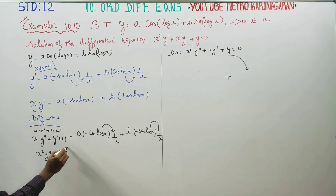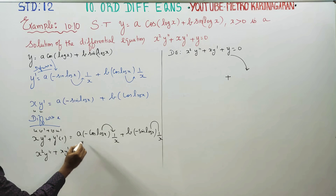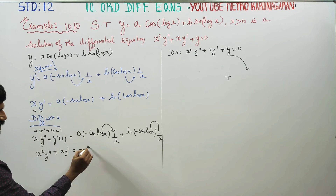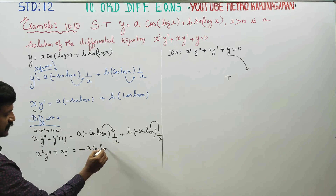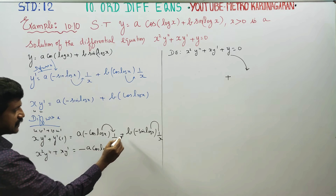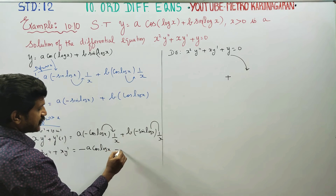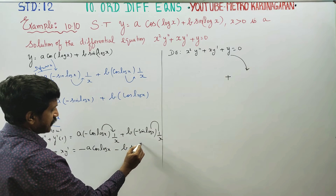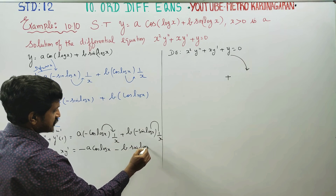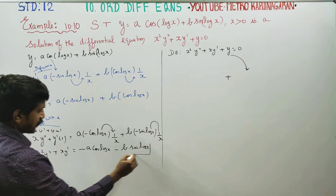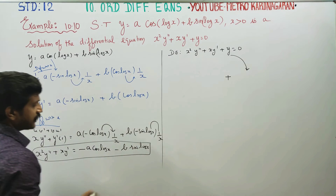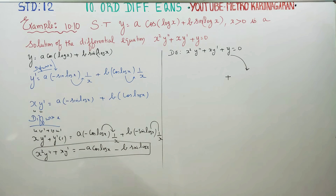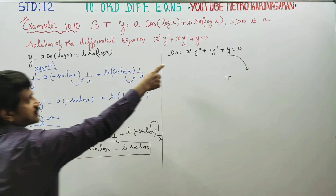So x·y' + x²·y'' gives minus a·cos(log x) minus b·sin(log x). Now combining, x²·y'' plus x·y' gives this result.